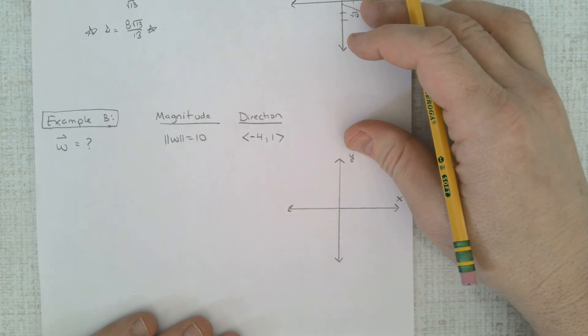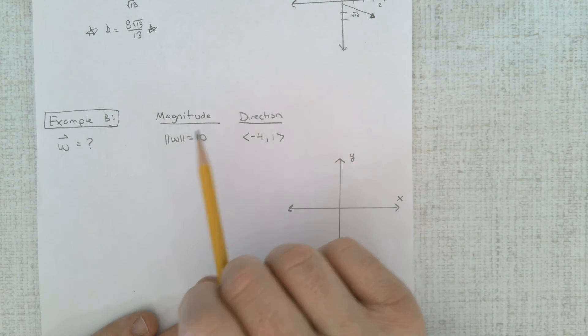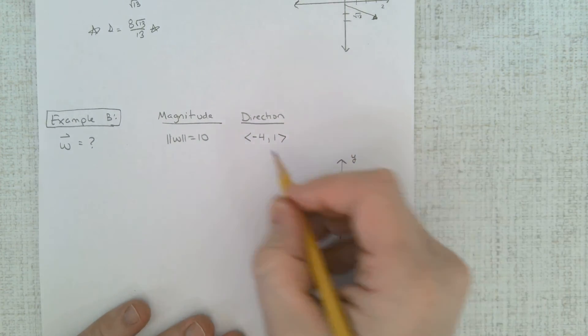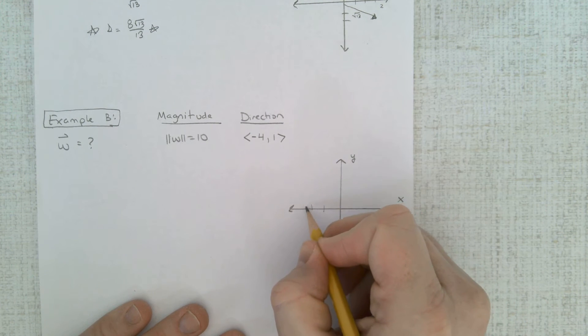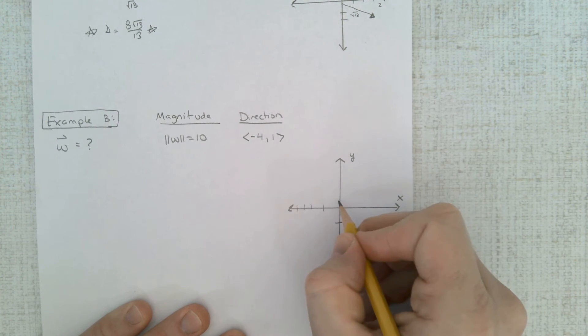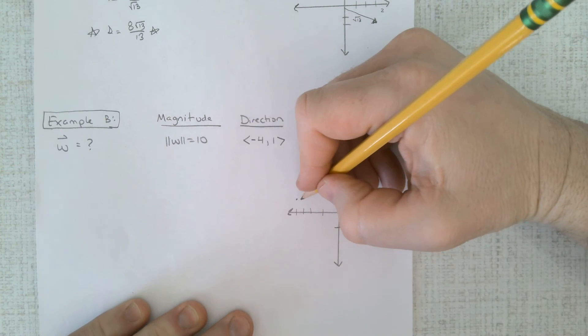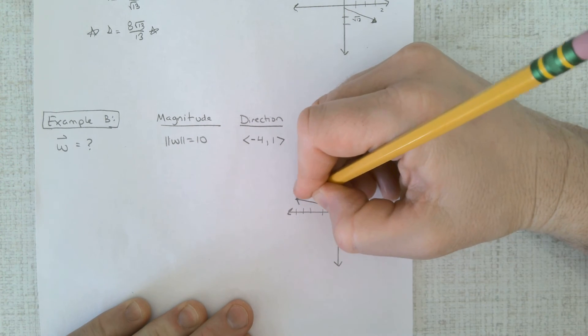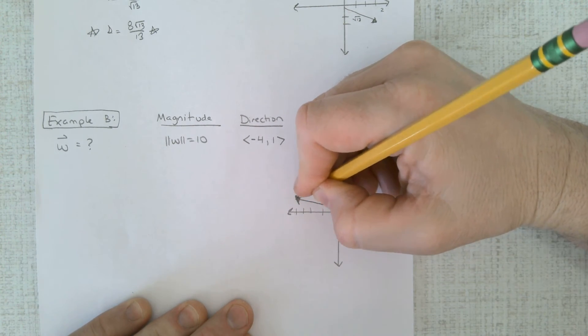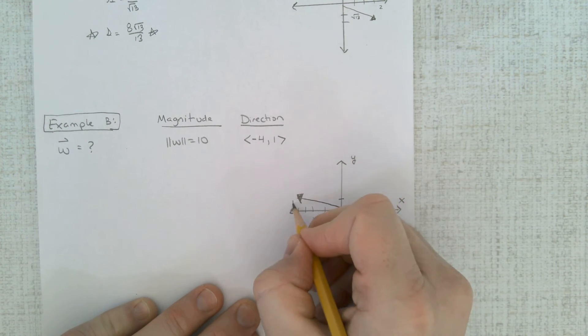Alright, let's do one more of those examples here. We need a vector w in this direction with this magnitude. Let's go ahead and draw this direction. 1, 2, 3, 4, 1 is up here so there's my vector. It's going negative 4, 1.